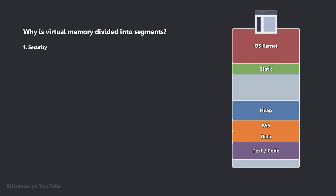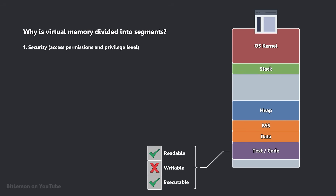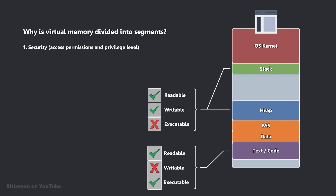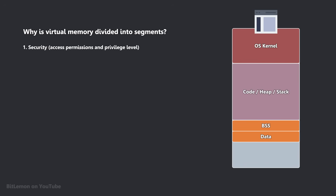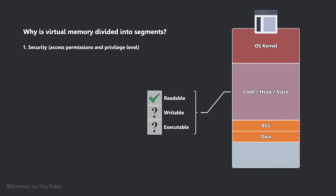The first reason is security. Each memory region has specific access permissions. For example, the code segment is read-only and executable, while the stack and heap are readable and writable, but not executable. Mixing code, stack, and heap segments would make access rights difficult to enforce, and open the door to vulnerabilities.